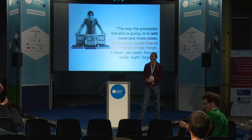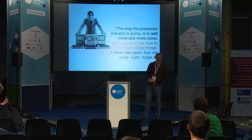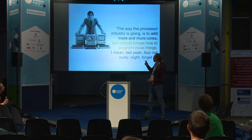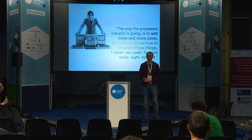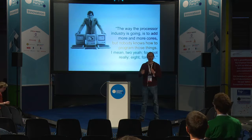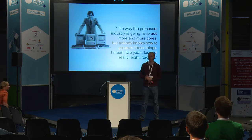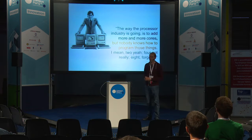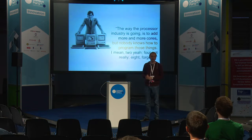Steve Jobs knew this. When he was young he already dreamt this up - he said nobody knows how to program these things. That's why an iPhone only has a dual-core, two cores, because you can't program more than those. You can have eight cores, but if you can't program them, two is actually good enough to have a responsive and fast phone.